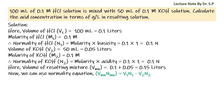Now we can use the normality equation: V_mixture × N_mixture = V1·N1 − V2·N2, where V1·N1 is for the acid and V2·N2 is for the base. We write minus instead of plus because this is a mixture of acid and base. If both solutions were acid or both were base, we would write V1·N1 plus V2·N2 instead.